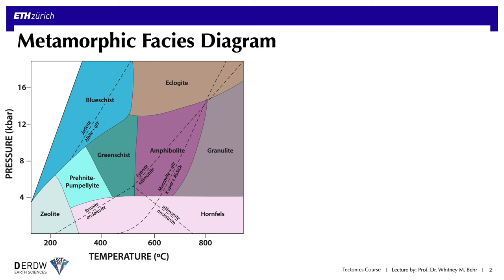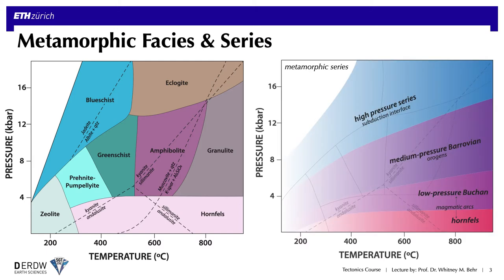I showed you this diagram in an earlier introductory lecture. It's a fairly generic pressure-temperature diagram with metamorphic facies and some primary reactions shown on it, and we discussed how subduction zones fall into the metamorphic series known as the high-pressure series shown in blue on the right-hand diagram, meaning they exhibit a relatively high pressure-to-temperature ratio compared to other tectonic environments such as orogenic belts, extensional terrains, or magmatic arcs.